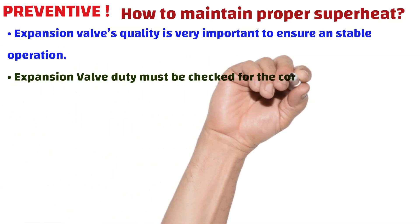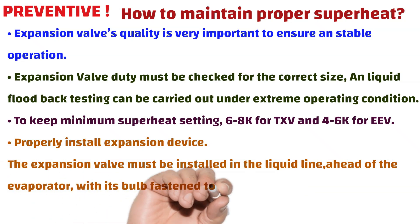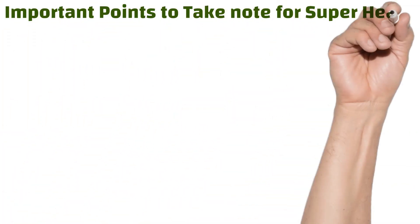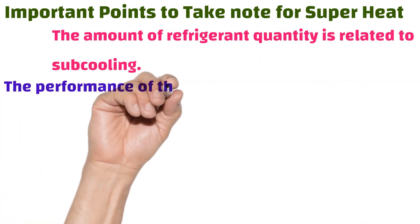How to maintain proper superheat: expansion valve quality is very important to ensure stable operation. The expansion valve duty must be checked for correct size, and liquid flood-back testing can be carried out under extreme operating conditions to keep the minimum superheat setting — six to eight K for TXV and four to six K for EV. The expansion valve must be installed in the liquid line ahead of the evaporator, with its bulb fastened to the suction line as close to the evaporator as possible.